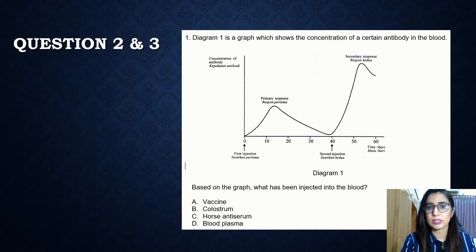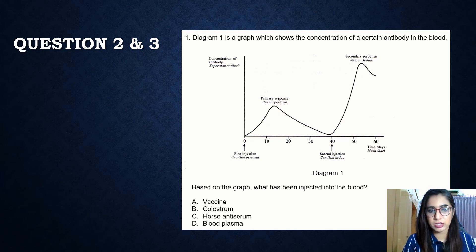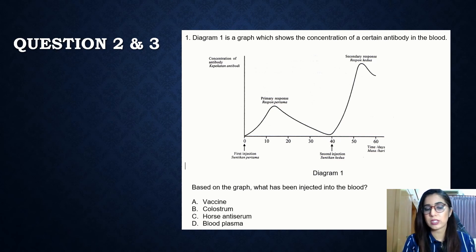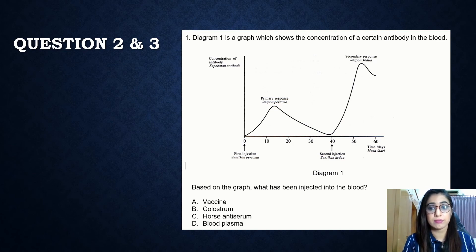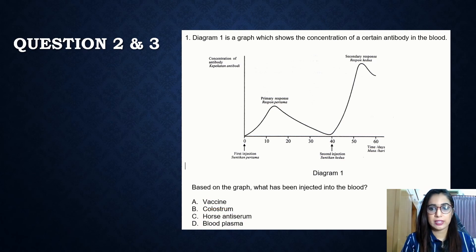Question three: a graph shows the concentration of a certain antibody in the blood, with a primary response and a secondary response from a first and second injection. Based on the graph, what has been injected into the blood? The answer is: vaccine.